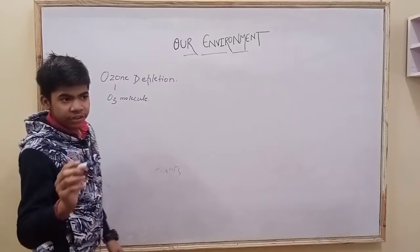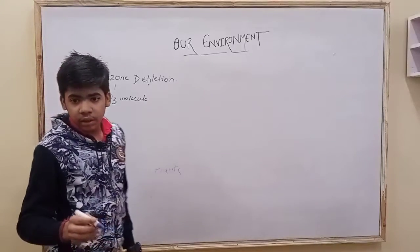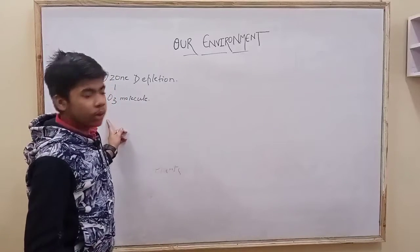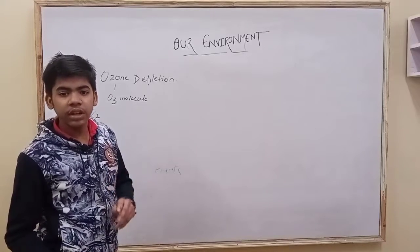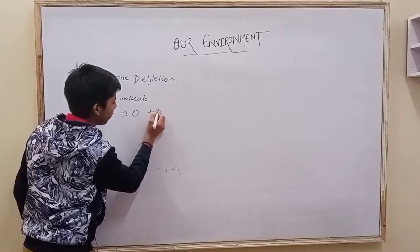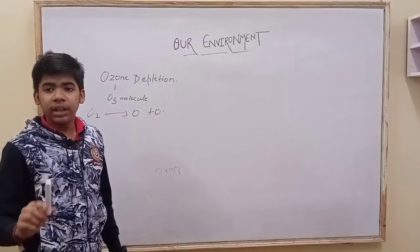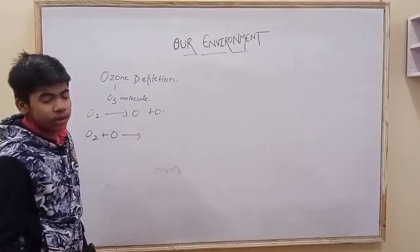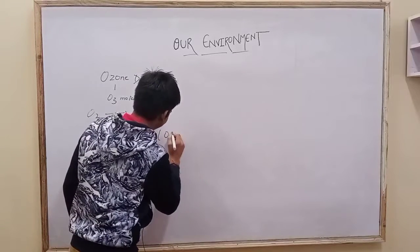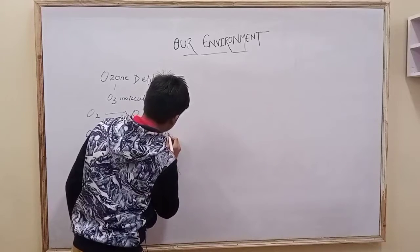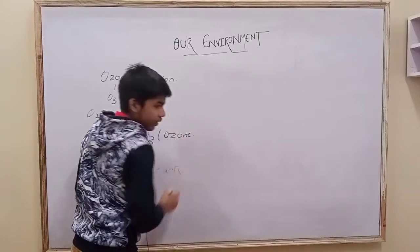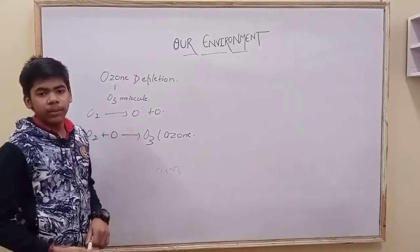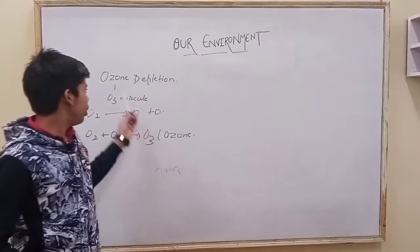The ozone layer protects us from ultraviolet rays. When ultraviolet rays fall on O2, the O2 splits into two parts — two nascent oxygen atoms (O). After that, O2 combines with one nascent oxygen to form O3, which is ozone. So ozone is a combination of O2 plus nascent oxygen (O).